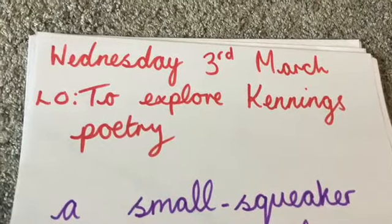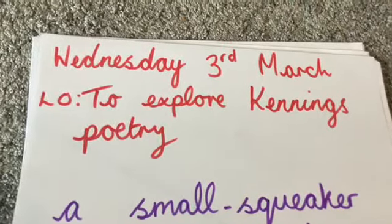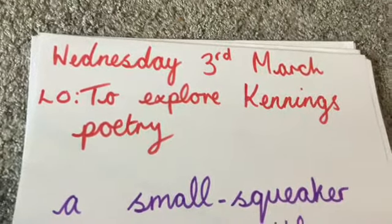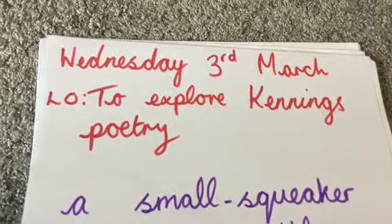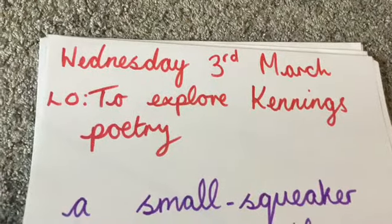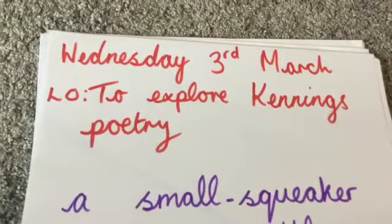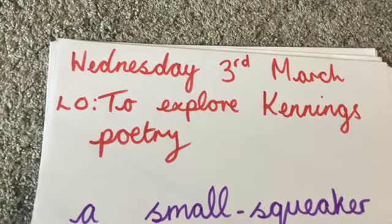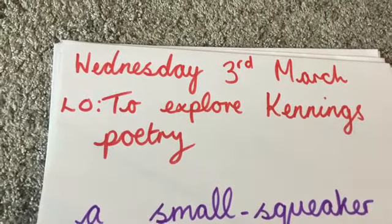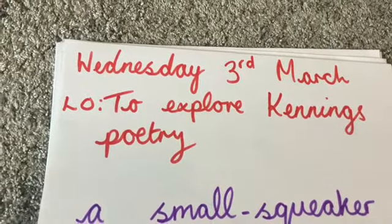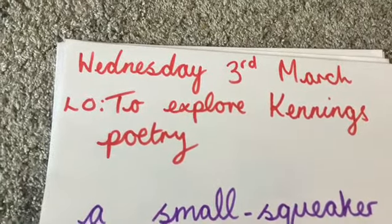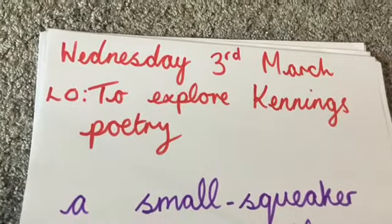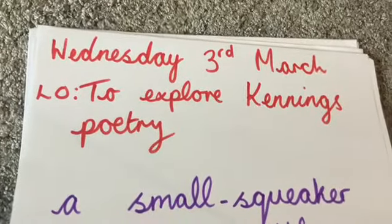Kennings is a type of poetry that is a little bit like a riddle. You have to guess what the poem is all about. It describes either a person, or an object, or an idea.